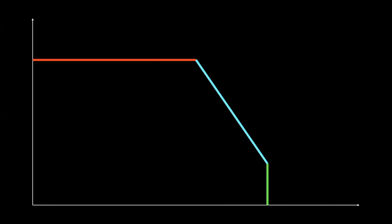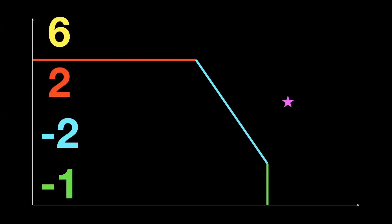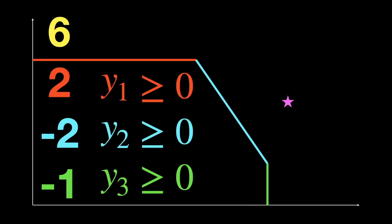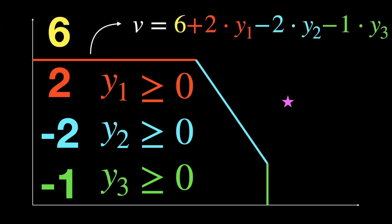This is a two-player game between the star player and the multiplier player. First, the star player chooses a point and receives the objective score plus scores for all the walls. Then the multiplier player chooses a non-negative multiplier for each wall. You compute the value v: the objective score plus the sum of each wall score times its multiplier. The star player wants to maximize v; the multiplier player wants to minimize it.